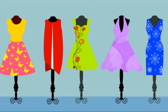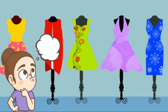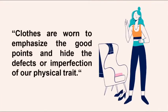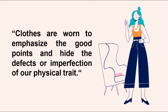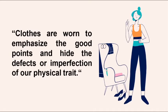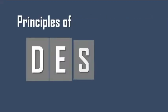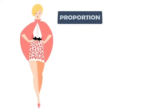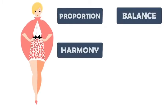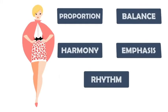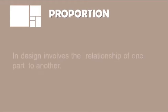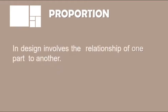For example, the directions would apply differently for a design of a costume than for a design of a current fashion garment. As we know, clothes are worn to emphasize the good points and hide the defects and imperfections of our physical traits. But how can we apply principles and elements of design here? Well, let's find out. In principles of design, we need to consider that good outfits should have proportion, balance, harmony, emphasis, and rhythm. The first principle is proportion — in design it involves a relationship of one part to another, and uneven space relationships are more interesting than even ones.